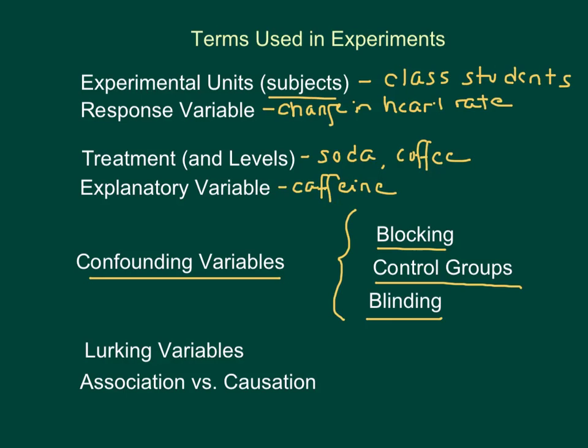Now, after an experiment's complete, it's important to consider any lurking variables because it might turn out that something we hadn't considered is causing the response that we got. For example, it's been shown that families with more television sets in their homes spend more on health care.